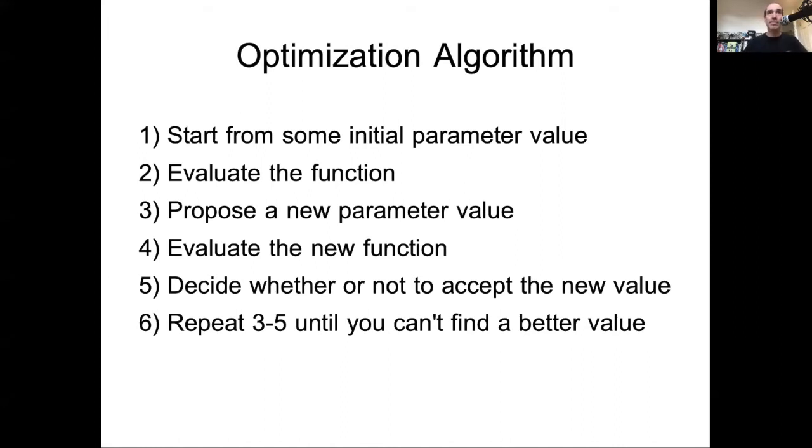So the general algorithm is: you start from some initial parameter value or your initial guess. You then evaluate the function at that initial guess. And then you propose a new value nearby, and you evaluate the function there, and then you decide whether or not to accept the new value. Pretty much all algorithms work under the assumption that if the new value is better than the current value, then you will move in that direction.